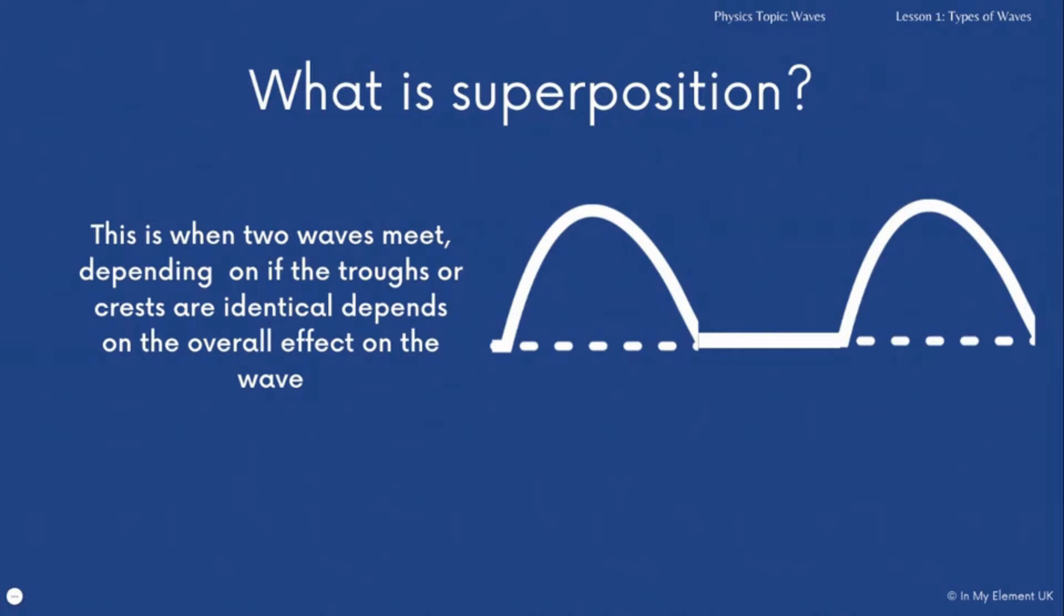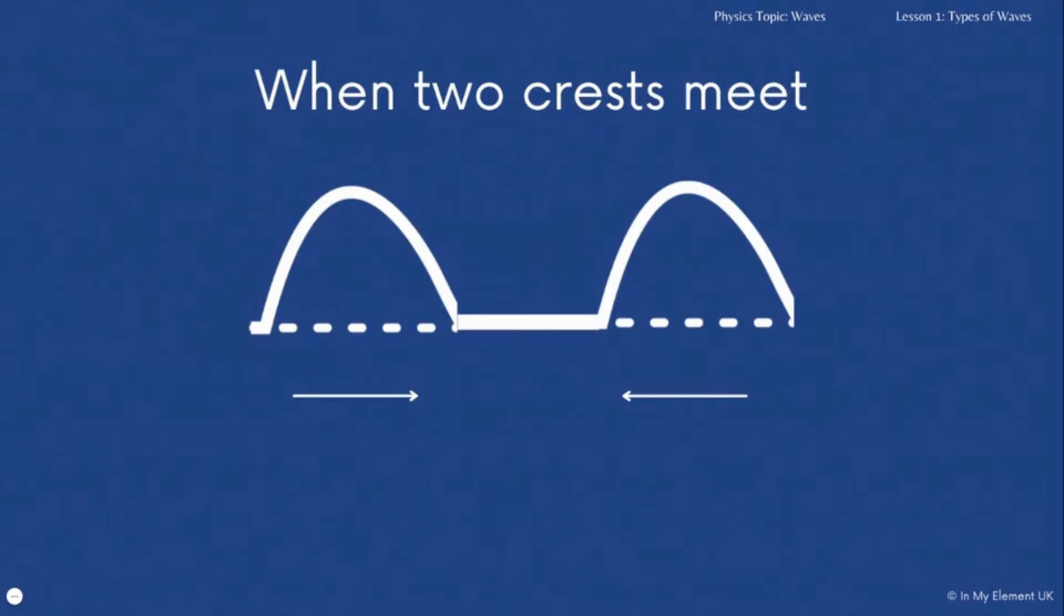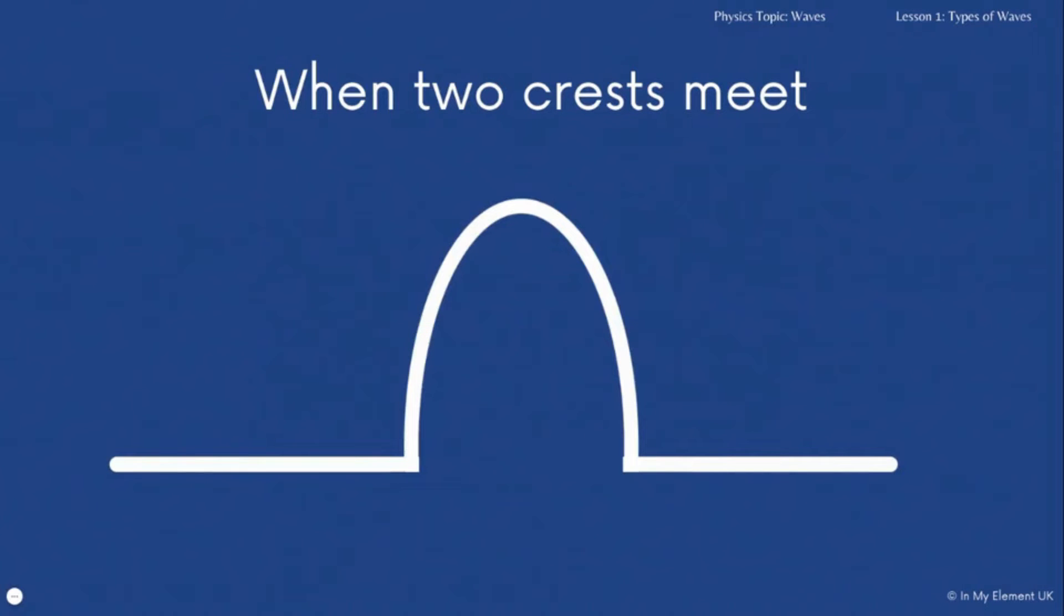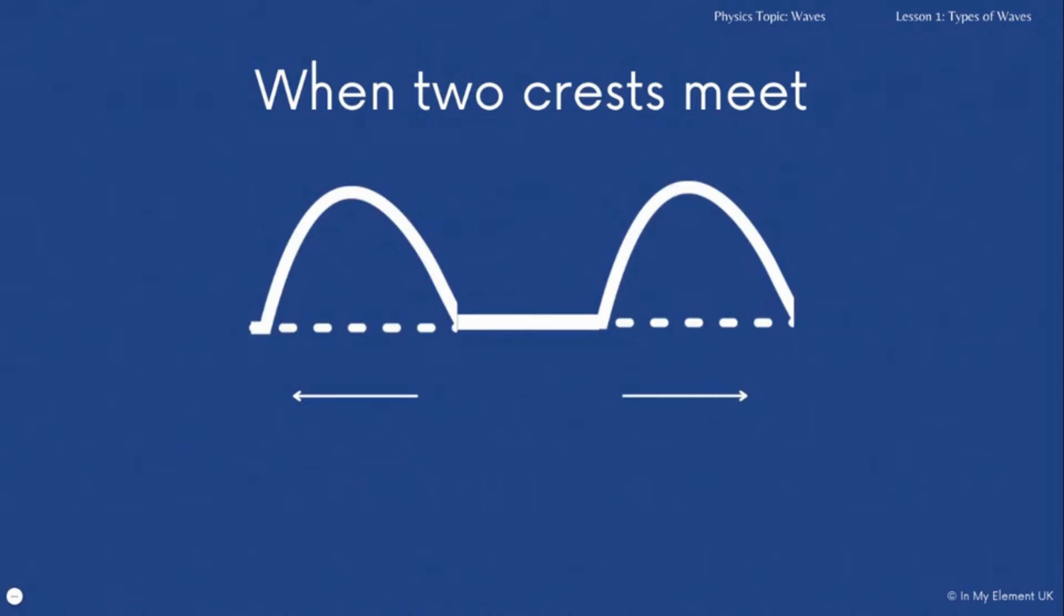When two identical crests meet, the height of each wave is added together, and that will give you a crest of a wave that has doubled. That will then return to the original size as well, moving back in and separating out.